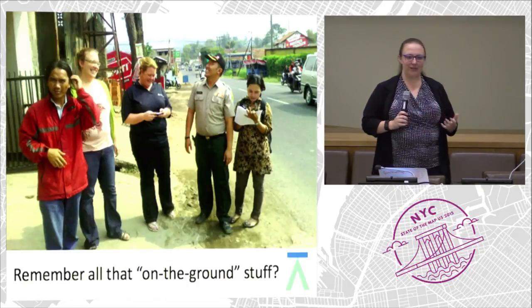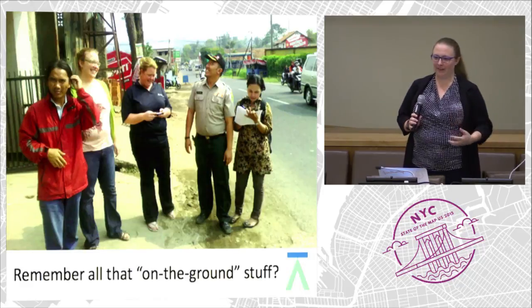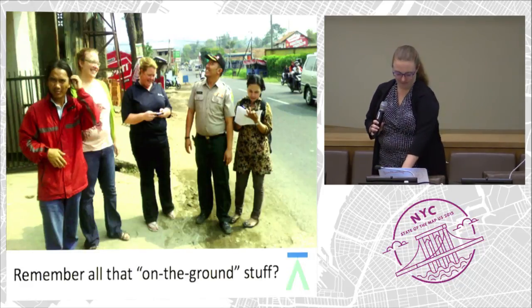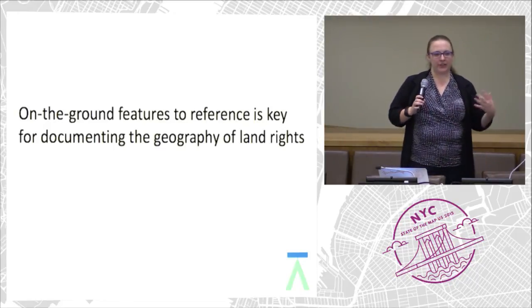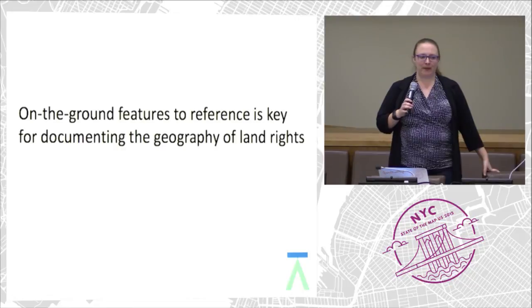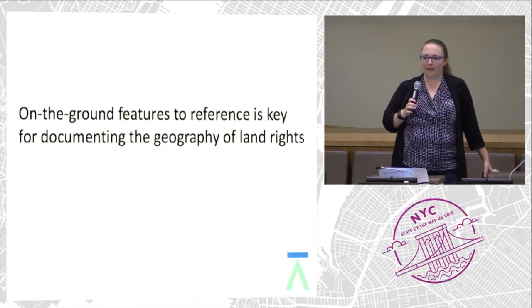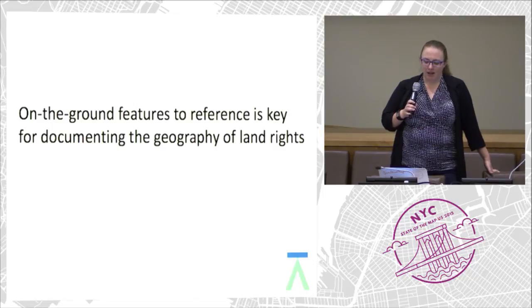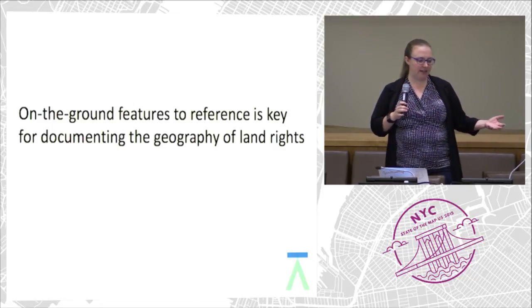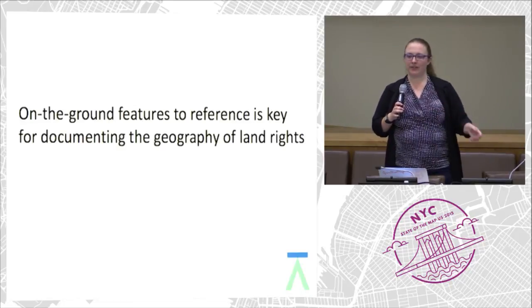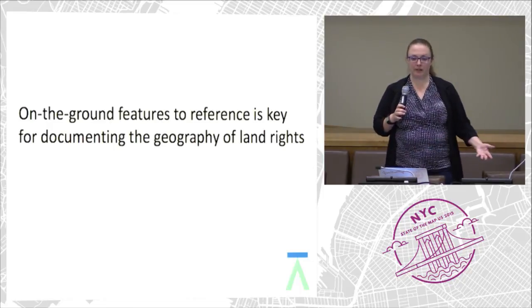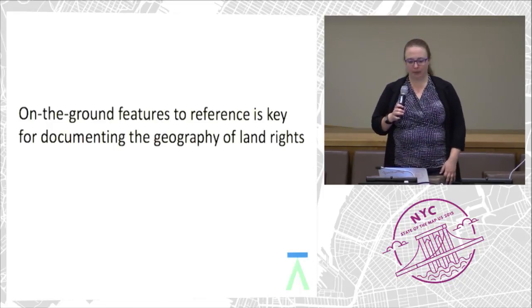Remember all that on-the-ground stuff? That's still really important. The on-the-ground features that the OpenStreetMap community is mapping are important — simply for having a map that's referenceable. If you're somewhere and you want to draw out a community's boundaries, you don't really start with a blank piece of paper. You would start with satellite imagery or maybe an existing map, and OpenStreetMap very much could be a part of that.